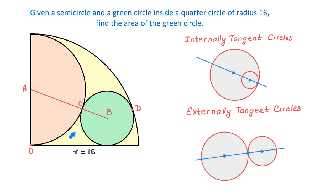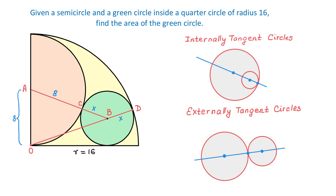If we connect points O and D, then this line will pass through the center of the green circle. Let the radius of the green circle be x. The radius of the quarter circle is 16 units, therefore AO is 8 units because it is the radius of the semicircle — half of the radius of the quarter circle. Then AC is also 8 units, because it is also the radius of the semicircle. The distance from O to D is 16 units, the radius of the quarter circle. So if OD is 16 units and BD is x units, then OB will be 16 minus x.